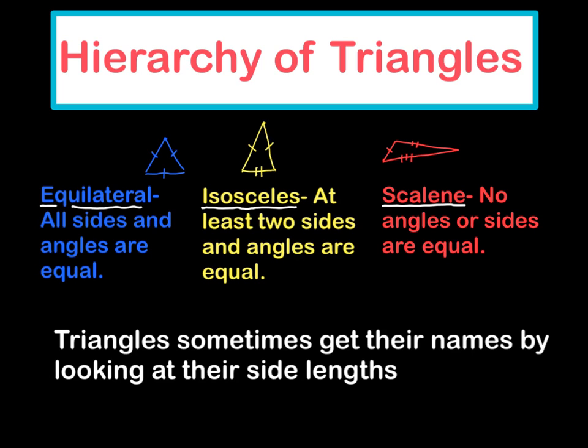And then we have scalene. Scalene has no equal angles, no angles or sides are equal. So everything is different. You can see each side has a different length, which therefore means each angle will have a different length.